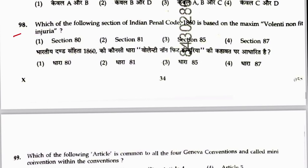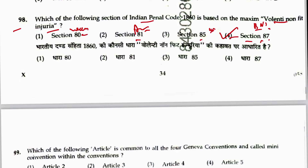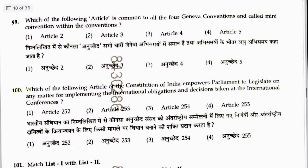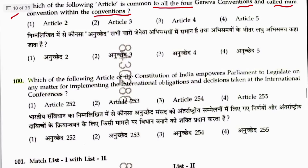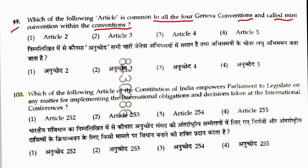Question 98: Which section of the IPC is based on the maxim volenti non fit injuria? That is Section 87. Answer is 4. Question 99: Which article is common to all four Geneva Conventions? That is Article 3. Answer is 2.